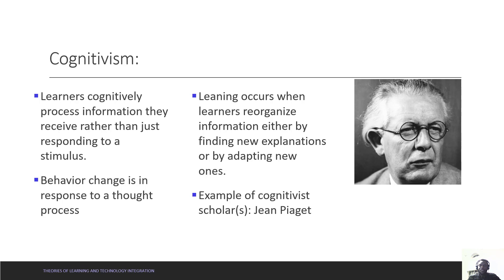In Cognitivism, learning occurs when the student reorganizes information either by finding new explanations or adapting old ones. An example of a well-known cognitivist is Jean Piaget.